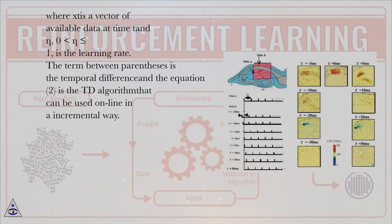Where ξ is a vector of available data at time t and η, 0 < η ≤ 1, is the learning rate. The term between parentheses is the temporal difference and equation (2) is the TD algorithm that can be used online in an incremental way.